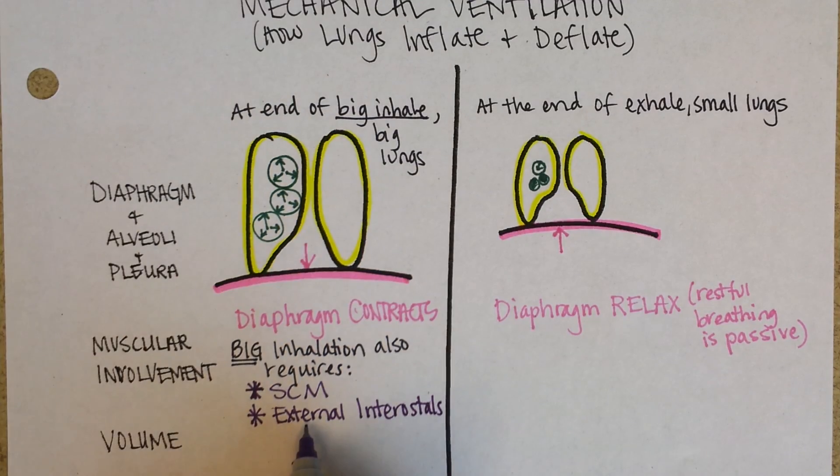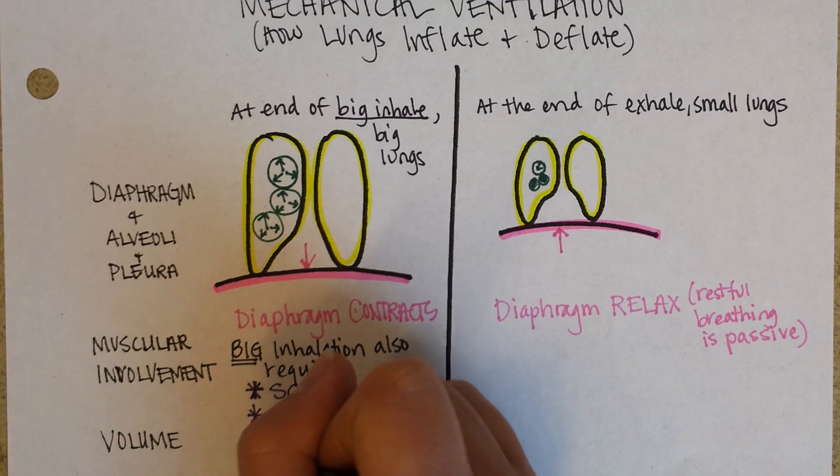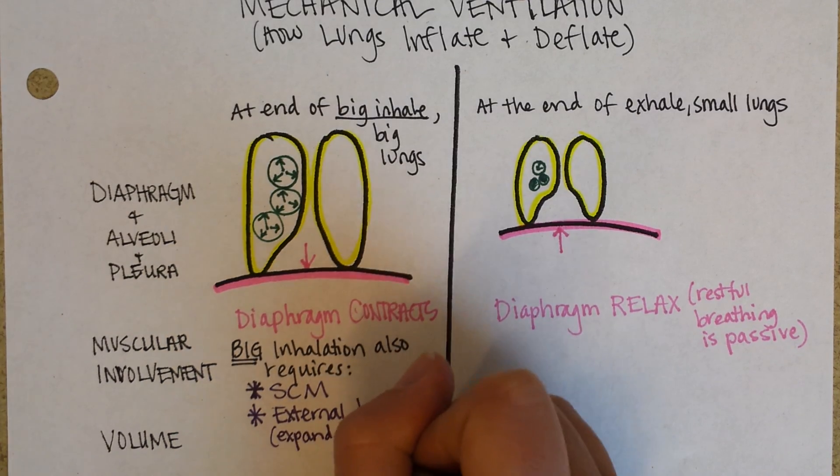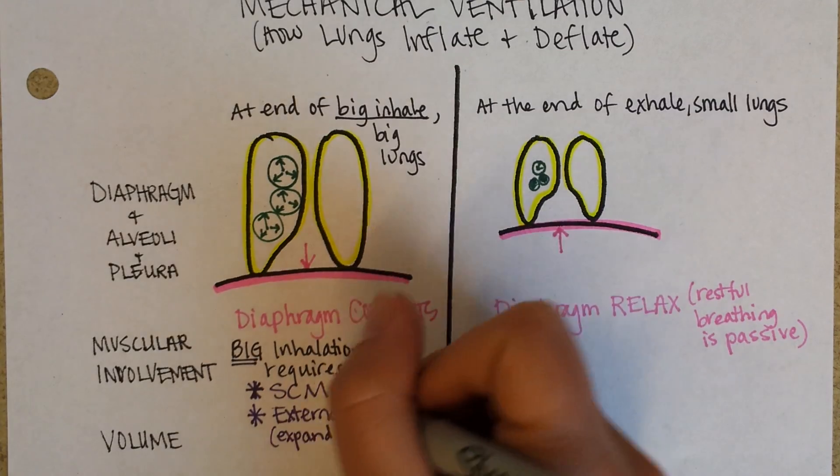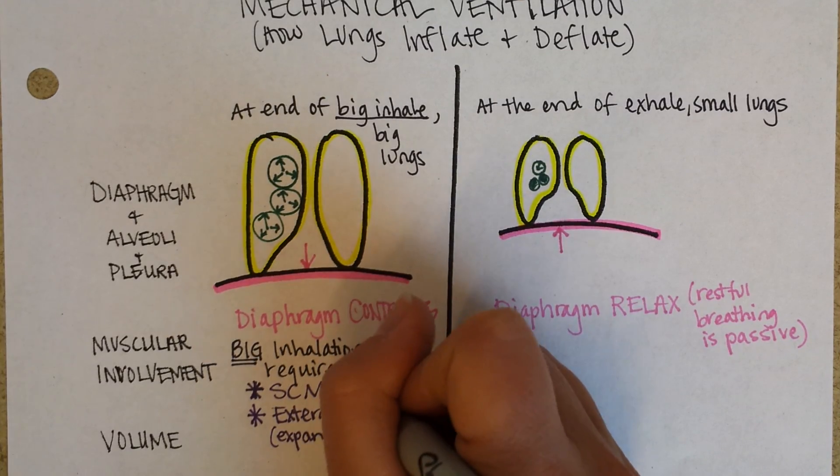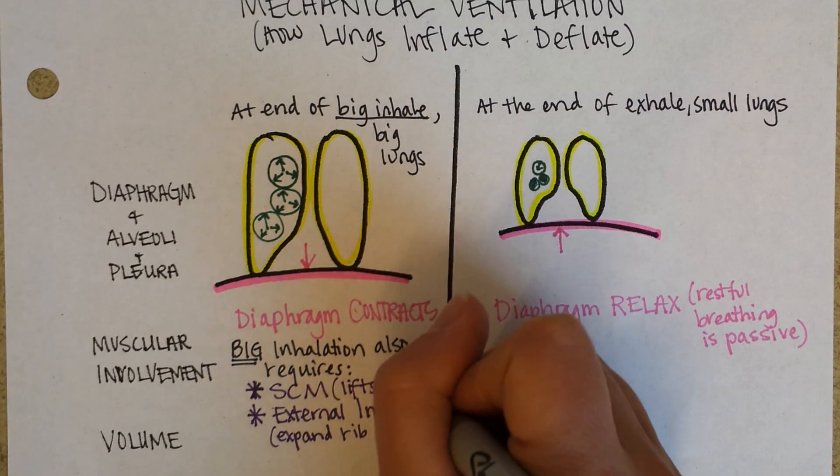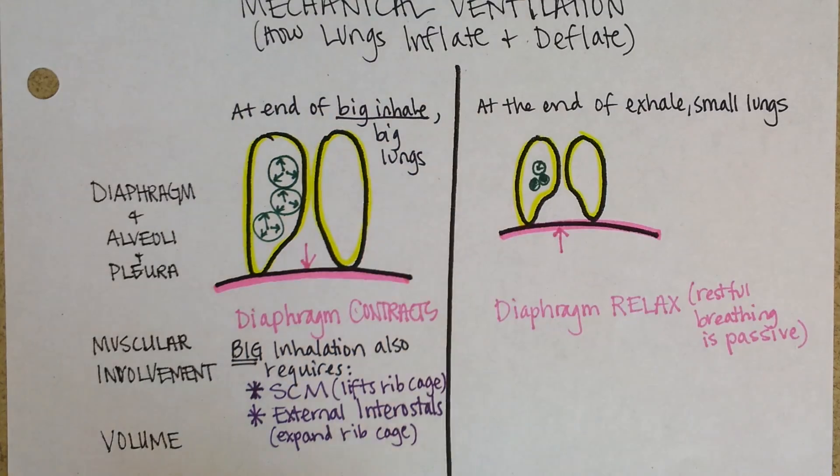Rib meat called the external intercostals. When these contract, they bring out the rib cage. So this expands the rib cage so that the lungs get bigger. And the SCM lifts the rib cage so that the lungs get bigger. The diaphragm going down also makes the lungs get bigger.